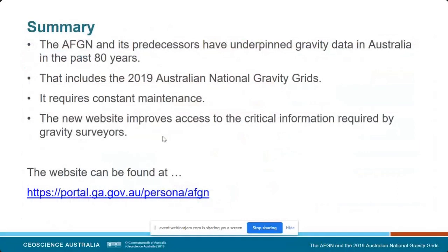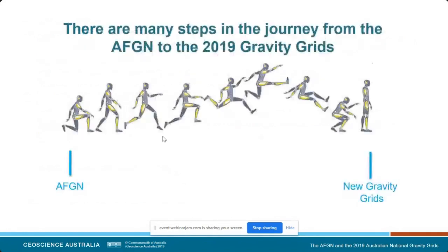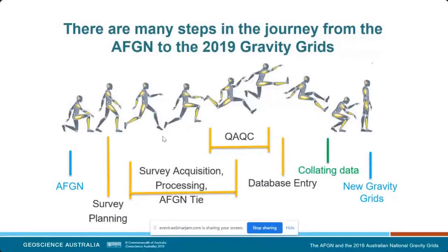We also provide diagrams for locations and photos so that you can see that you're in the right spot and go straight to the station. In summary, the AFGN has been underpinning the gravity data for more than 80 years. It is the basis of the new grids. It does, however, require constant maintenance because stations do get destroyed, so we have to replace them or put new ones in new areas. This website will allow those who need that information to find it easily. There are many steps between establishing the AFGN and producing the new grids which we won't go into today — we'll just show you the bright shiny new thing, and with that I'll hand back to Richard.